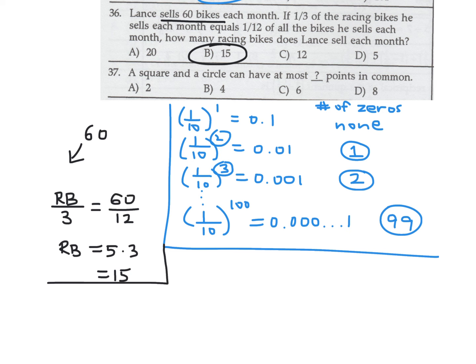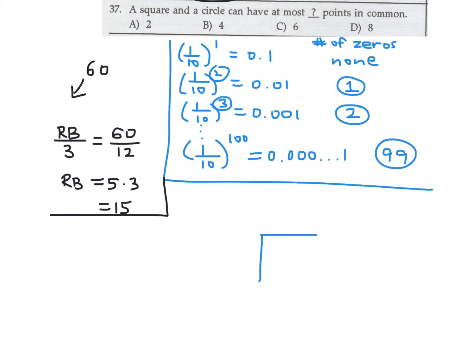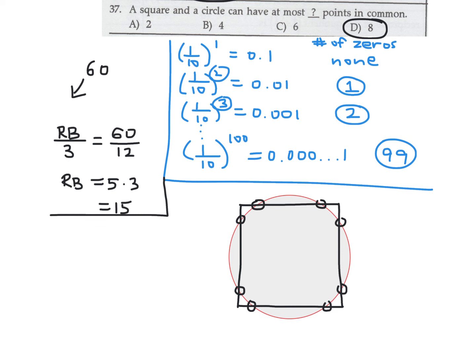A square and a circle — at most how many intersection points can they have? Drawing a circle and a square that cuts through it, you can count up to 8 intersection points. That's the highest answer choice, so the answer is D for number 37.